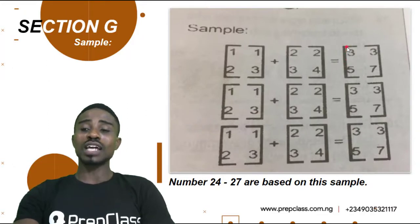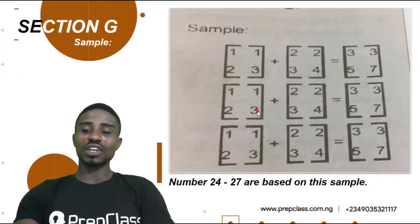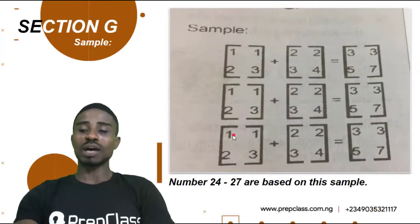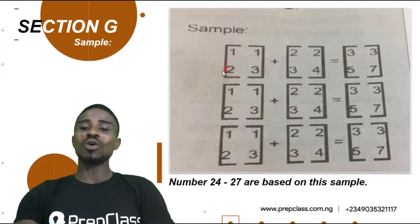To confirm it is actually true, we will try out other samples. On this other sample: 1 plus 2 equals 3 — correct. 2 plus 3 equals 5 — correct. 3 plus 4 equals 7. So we've confirmed: 1 plus 2 equals 3, 2 plus 3 equals 5, and 3 plus 4 equals 7. We've come to an understanding of how we got this sample, and with this understanding we'll be implementing it in questions 24 to 27.